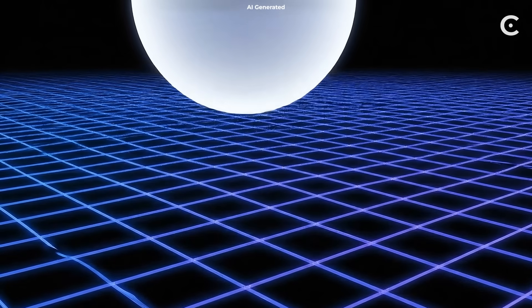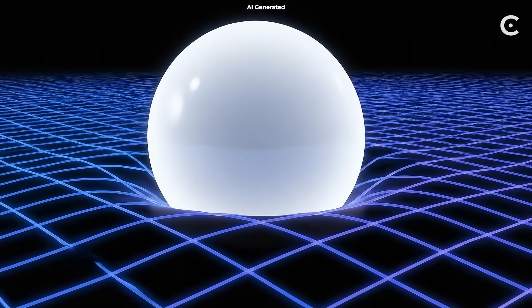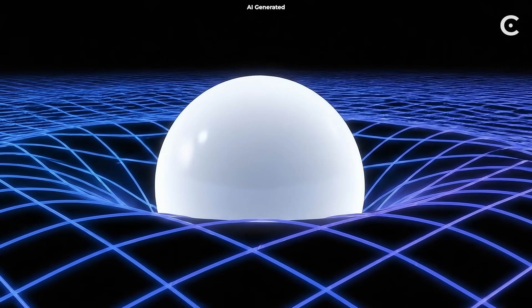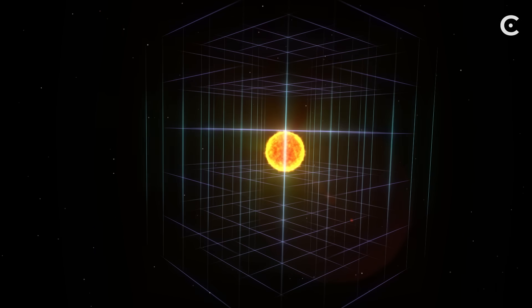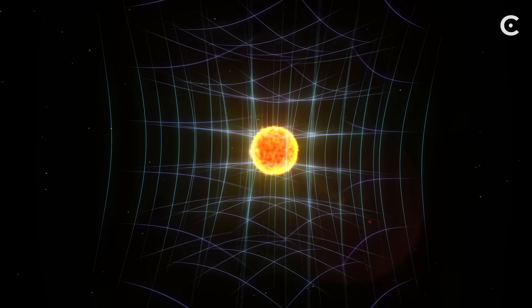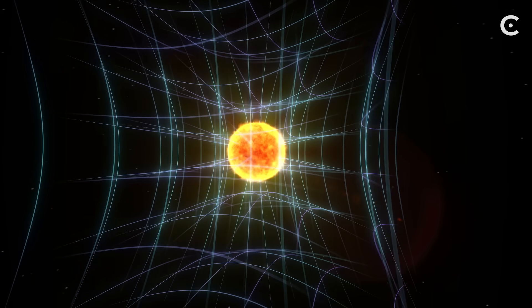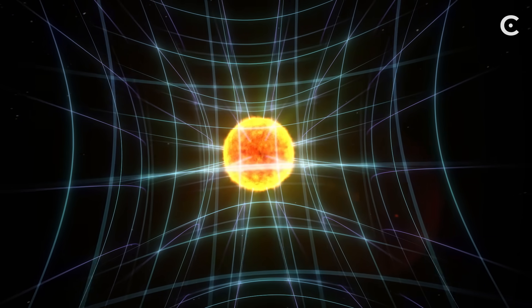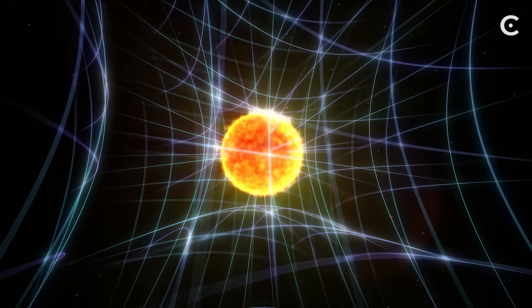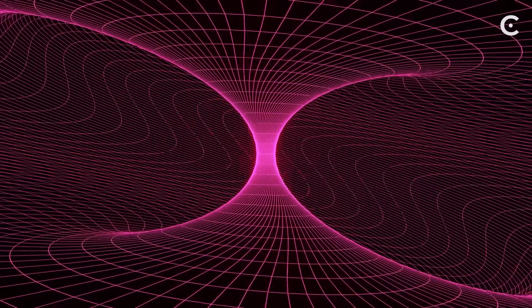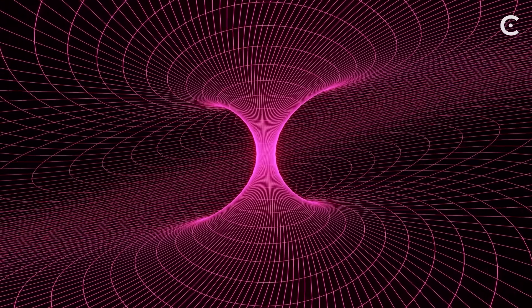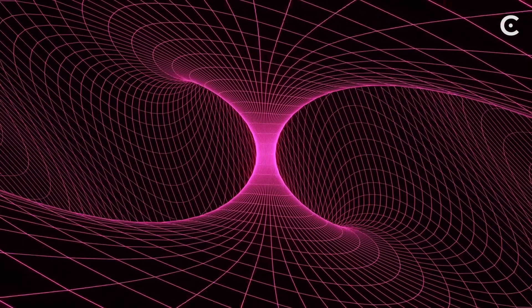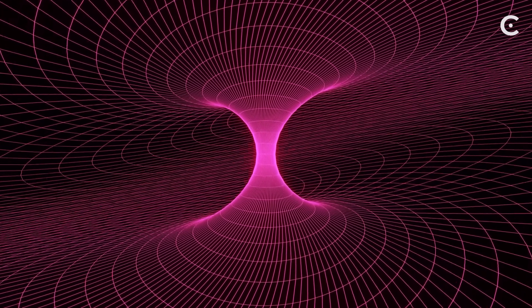So, how do we picture this cosmic fabric? The rubber sheet analogy I mentioned earlier is actually pretty good, but it's not perfect. Real space-time is four-dimensional, not two-dimensional like a sheet. Think of space-time as having three dimensions of space plus one dimension of time all woven together. When physicists talk about the fabric of space-time, we're not being poetic. There's literally a mathematical structure that behaves like a flexible material.